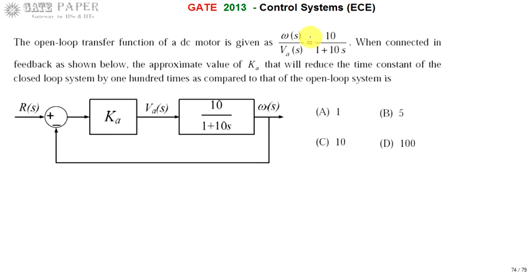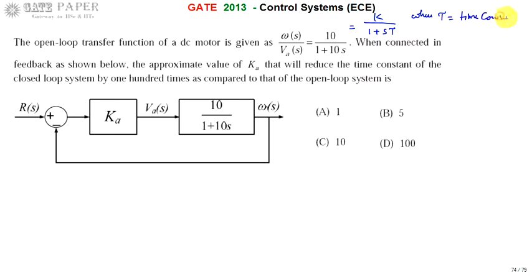The open-loop and closed-loop systems are going to be first order. The standard time constant form of a first-order transfer function is k divided by (1 + s·τ), where τ is the time constant. Comparing with the given open-loop transfer function, we can identify τ for that system.